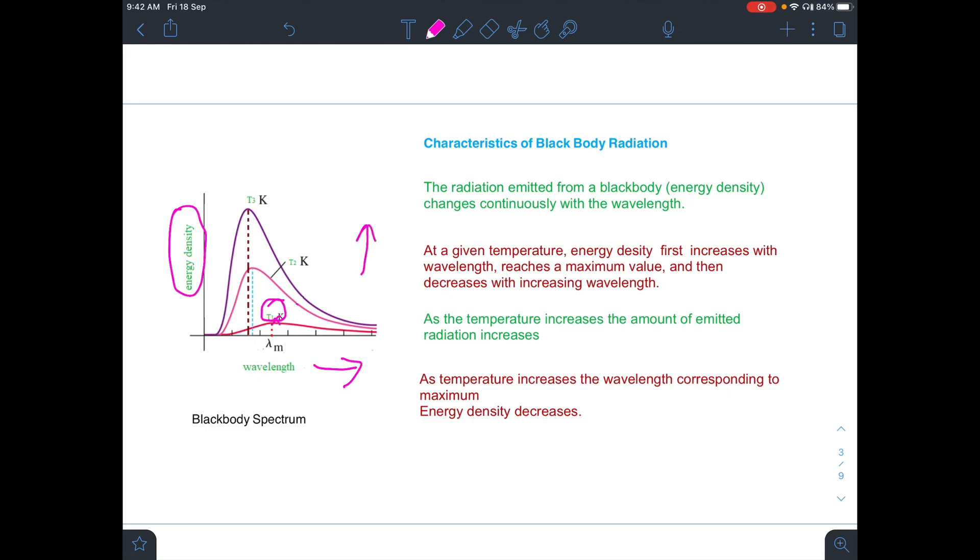reaches a maximum value and then decreases with wavelength. As temperature increases, you have T3 greater than T2 and greater than T1. If you increase the temperature from T1 to T2, the energy density will again increase with wavelength, reach a maximum value and then decrease. But as temperature increases, the amount of emitted radiation is also increasing.